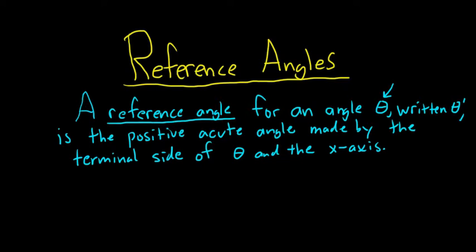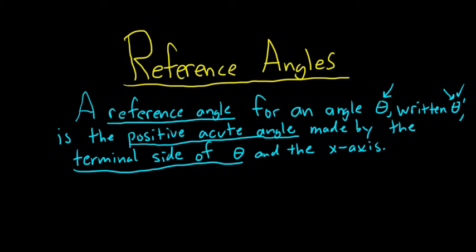It's a big definition and a very important one. So the reference angle for an angle theta, which we're calling theta prime, is the positive acute angle made by the terminal side of theta and the x-axis. That's the key.